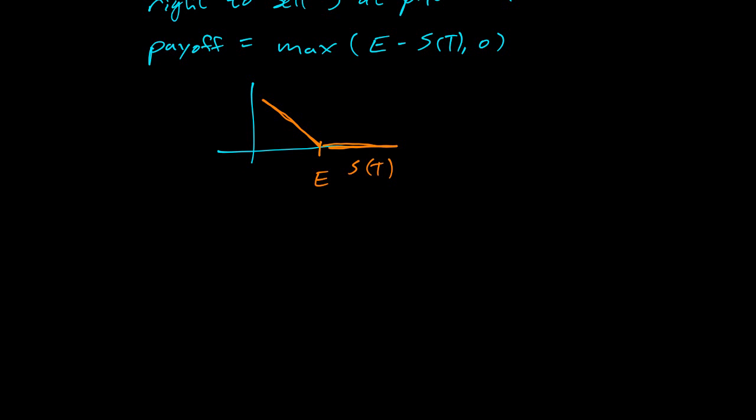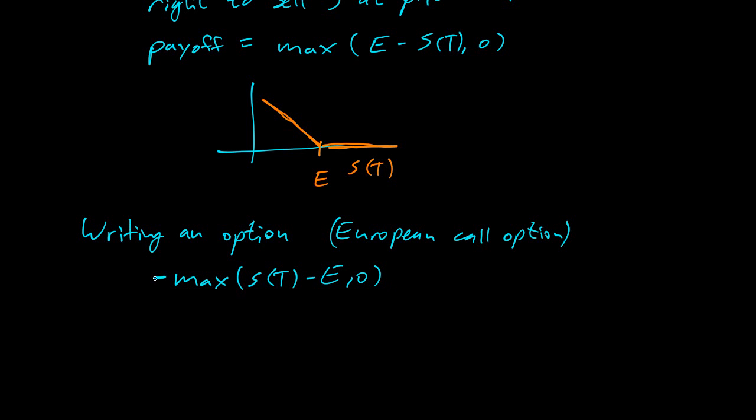What about writing an option? Every time there's an option, there's someone on either side, the writer and the buyer. For the buyer of a European call option, they have max of S of T minus E comma zero. If I'm writing the option, I get exactly the negation. Writing means negating the payoff.